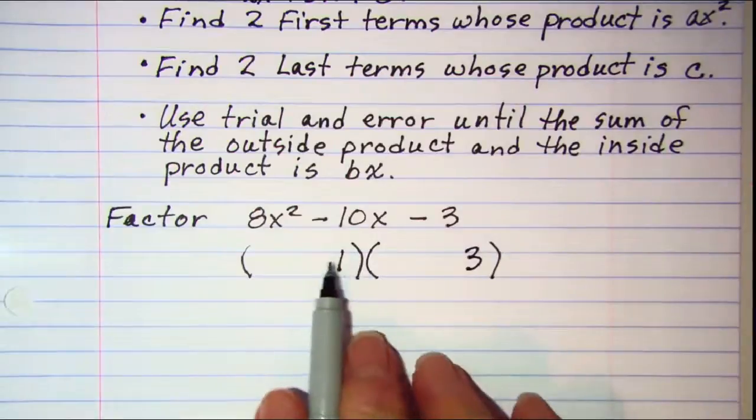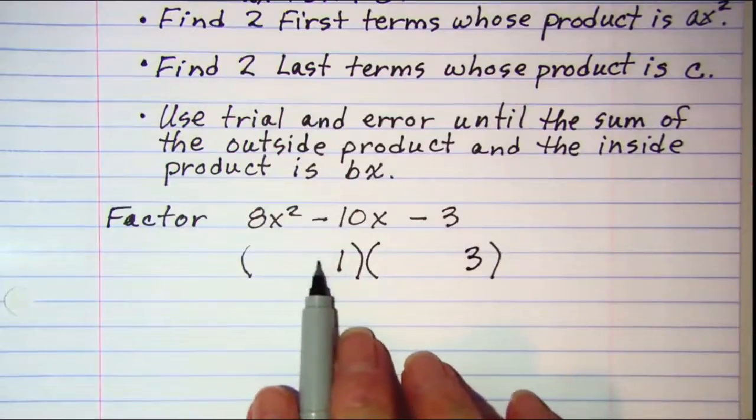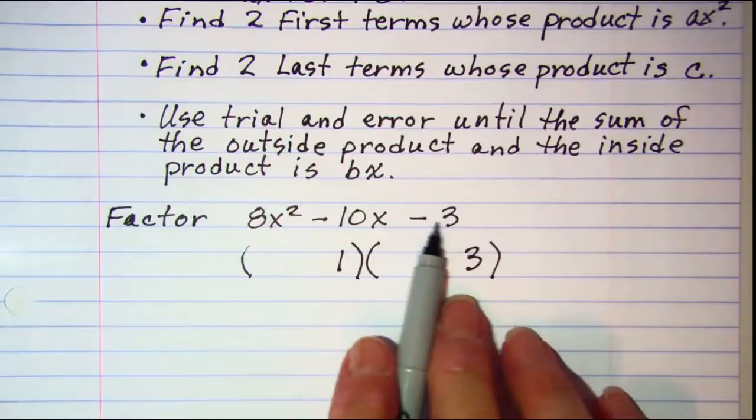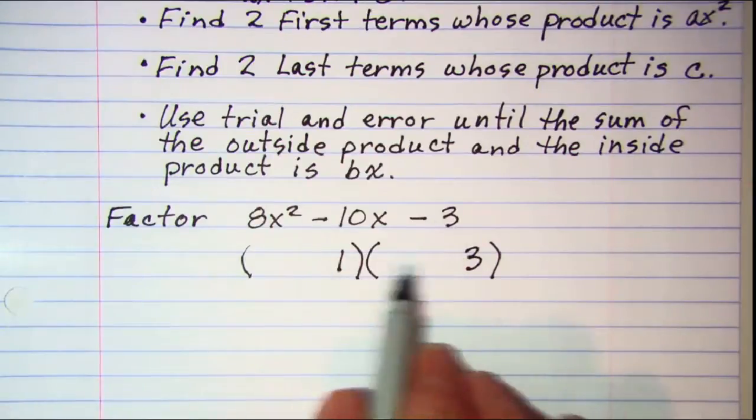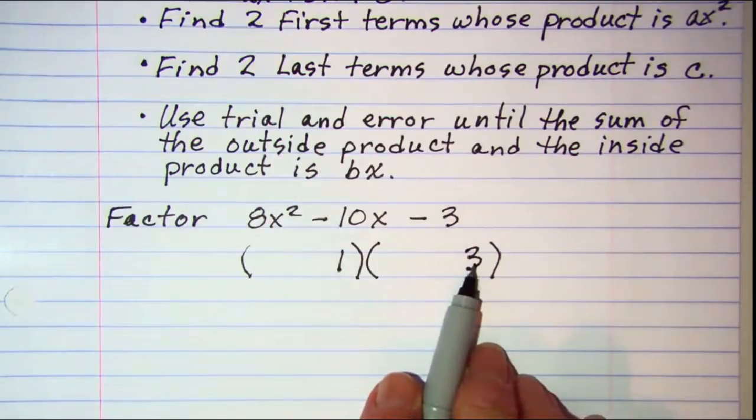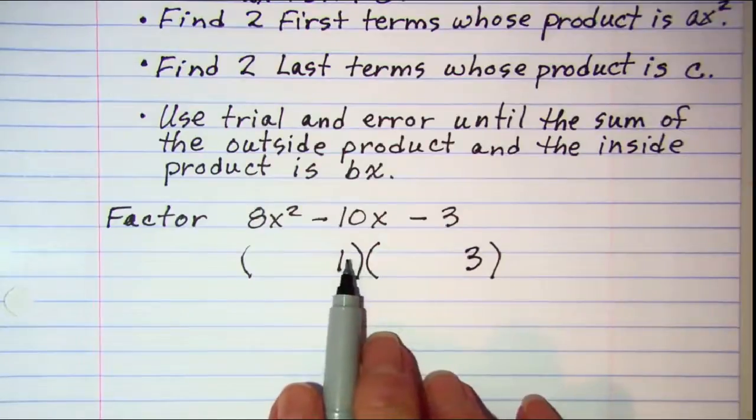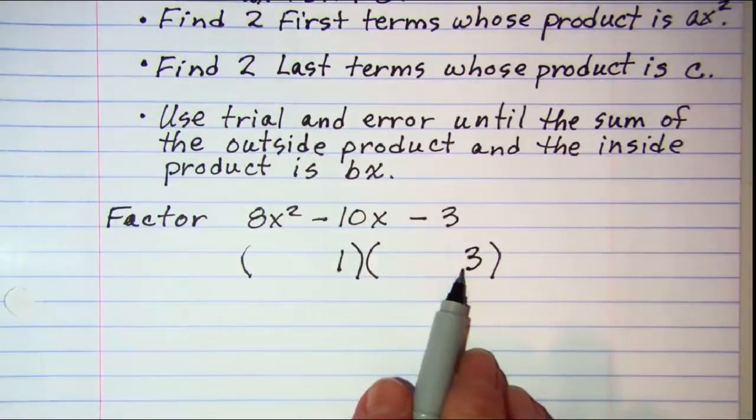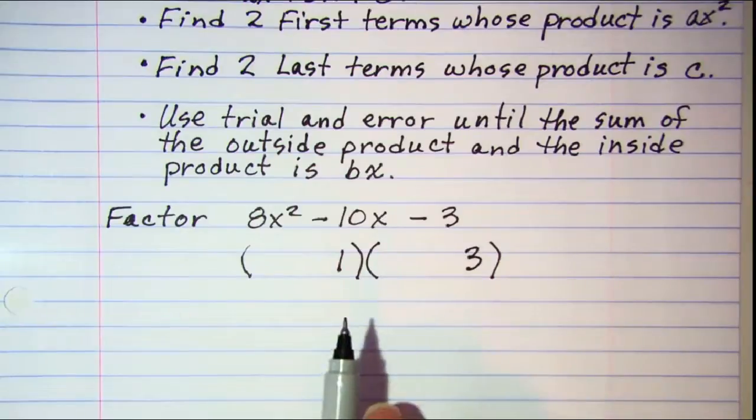Now notice that I'm not putting any signs in here. I know that to get negative 3, one of these has to be negative and one positive. But I find it easier to just work with the numbers and then put my signs in later.